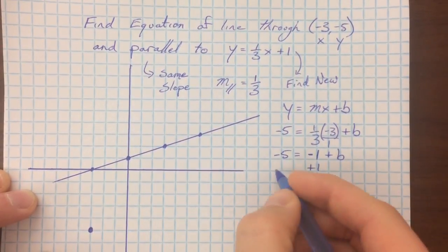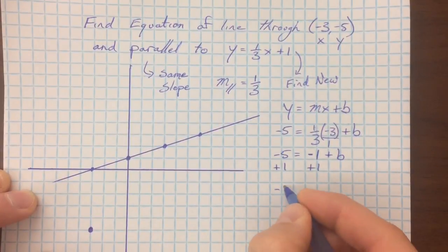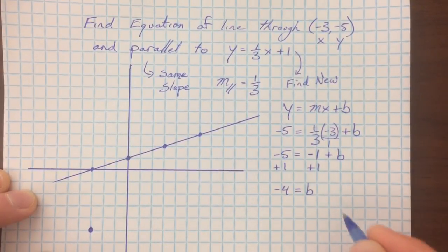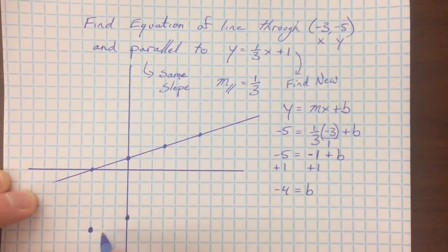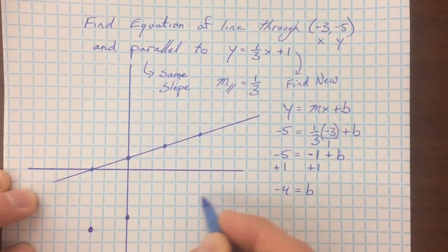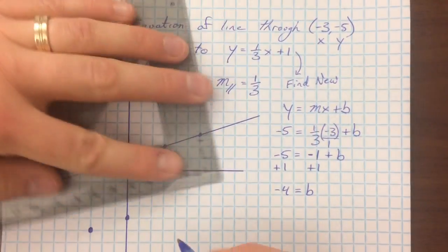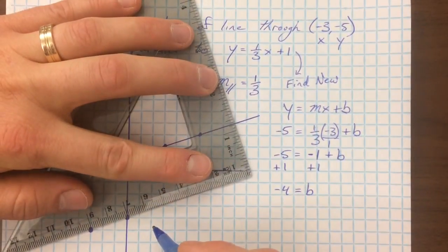If you add your 1, you get negative 4 equals your b. And so this is our new y-intercept, and so it's going to cross right here, which visually makes a lot of sense, because I can draw my line just like this, and I've got some parallel lines.